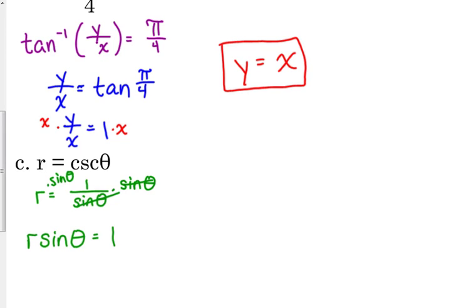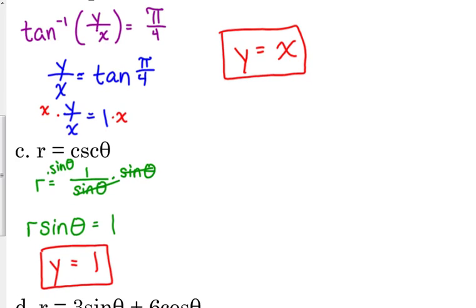What is r sine of theta equal to? It's equal to 1, but what can we replace it with? r sine of theta is equal to y. So, y equals 1 is the rectangular form of the equation r equals the cosecant of theta.